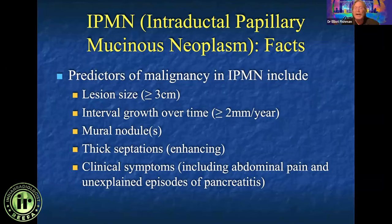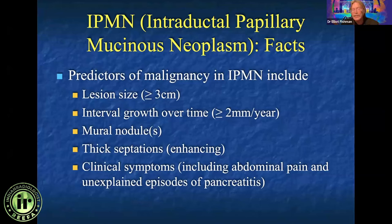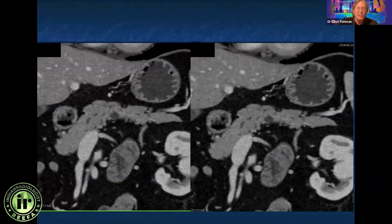Looking at the literature, lots of things have been written from the Tanaka criteria forward. Some of the things that predict malignancy: lesion size over 3 cm — there was a time when any lesion 3 cm or better was automatically resected — growth over two millimeters a year, and the presence of mural nodules or thick septations are always concerning. Whenever I see those in a lesion, I'm worried the patient has malignancy, and invariably the patient will get EUS and almost invariably surgery. We always worry about IPMNs, even if they don't look very aggressive, if patients have clinical symptoms.